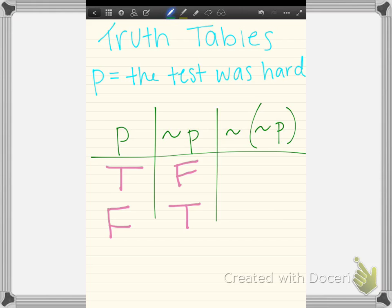If we look at this third column, we have the not of not P. This is called a double negation as we learned in our last lesson. So I'm taking the negation of this column right here. If not P is false, then not not P is going to be true. And if not P is true, then not not of P will be false.